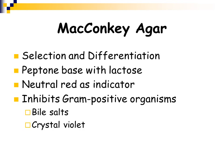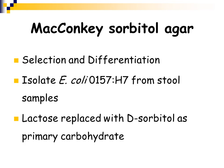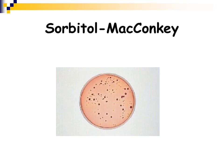On MacConkey agar, non-lactose fermenters will be a creamy looking color, while lactose fermenters will turn a bright pink color. MacConkey with sorbitol is also selective and differential, only allowing gram-negative organisms to grow, but instead of lactose, it uses sorbitol as the carbohydrate source. This media allows you to identify enterohemorrhagic E. coli O157:H7, because regular E. coli can ferment sorbitol but E. coli O157:H7 cannot.